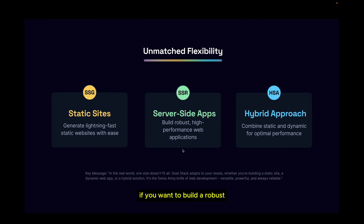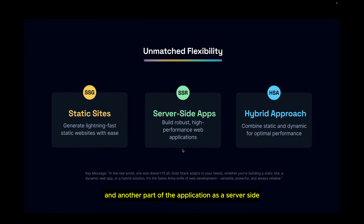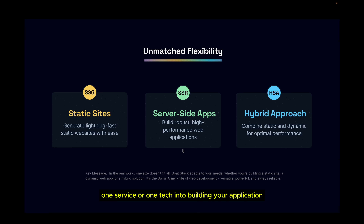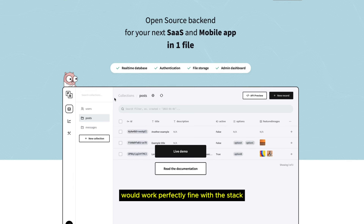If you want to build a robust, performant web application — for example, you have APIs or microservices built with Go — you can use the GOAT stack to implement them in a performant and simple way for server-side applications. You can also use a hybrid approach, serving part of the application as static and part as server-side. For databases or other services, GOAT stack doesn't restrict you — I'd recommend a backend-as-a-service solution like Firebase, Supabase, or Pocketbase for smaller projects.